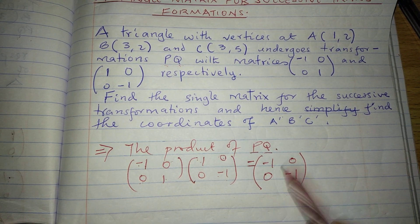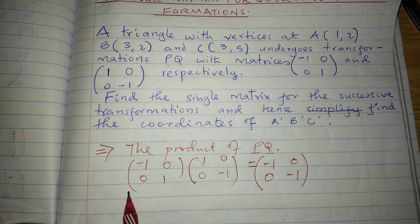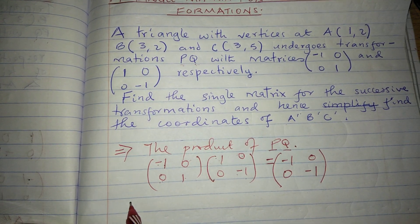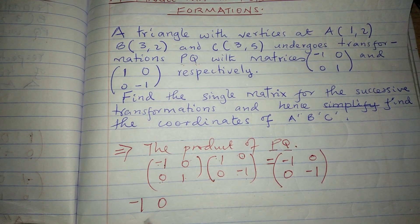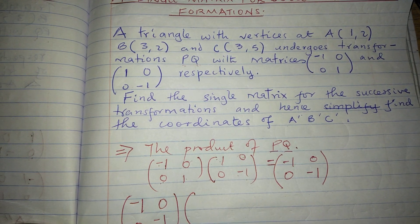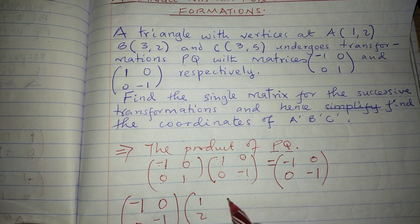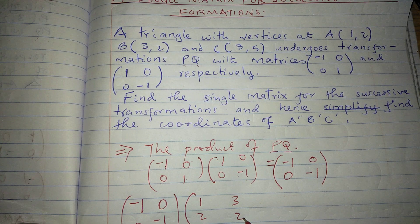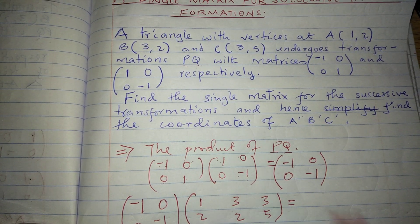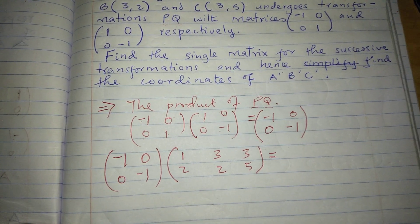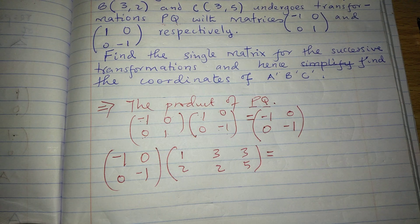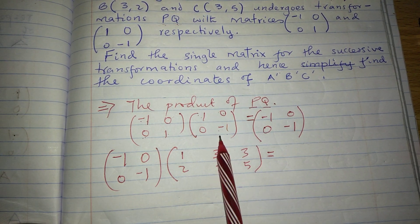Therefore, this matrix now represents the successive transformations PQ. Now we can take the column vectors — we first write the matrix of transformation, then the column vectors of the coordinates: A which is (1, 2), B which is (3, 2), and C which is (3, 5). Multiplying this object with the product of the two matrices will give us the answer we would have gotten if we transformed starting with Q followed by P.